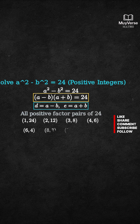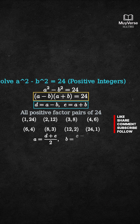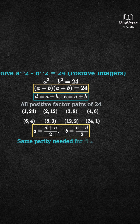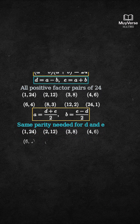Step 3: enforce the parity condition. Since a equals (d plus e) over 2 and b equals (e minus d) over 2, d and e must have the same parity so that d plus e and e minus d are both even. Bring our pairs back into focus, and cross out the pairs that are not same parity. Keep only the even-even pairs.